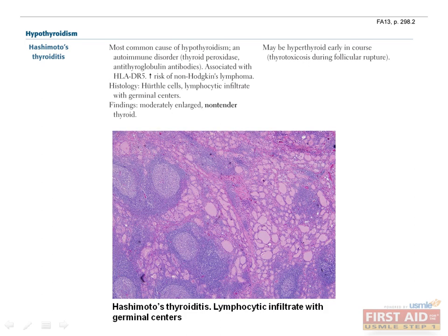Histological examination reveals classic Hürthle cells and lymphocytic infiltrate with germinal centers. Both T cells and B cells are present, but it is not known if one cell type has greater importance in the pathogenesis than the other. Clinically, a typical finding is a moderately enlarged, non-tender thyroid gland.